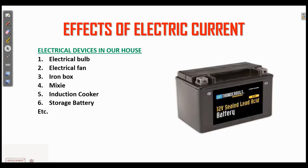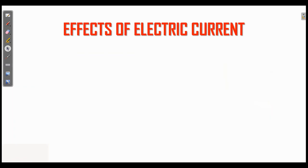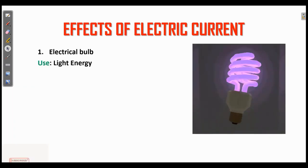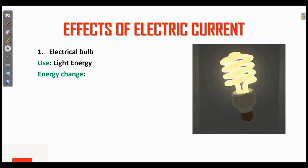Now we are going to discuss each one in detail. So, electrical bulb - what is it used for? Simple. Electric bulb gives light energy. Then what is the energy change behind the electric bulb? Electrical bulb converts electric energy into light energy.